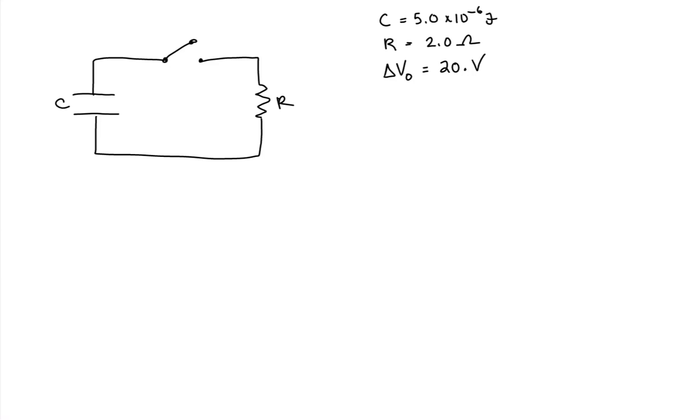Based off of the charging of the capacitor, the positive charges accumulate on the top plate of the capacitor. The negative charges accumulate on the bottom plate of the capacitor.